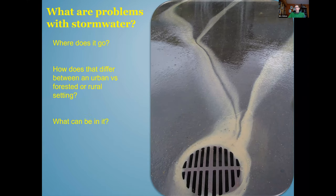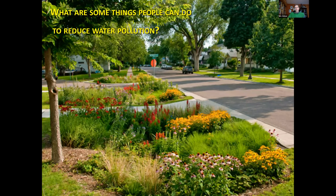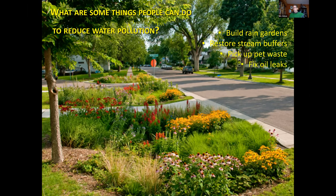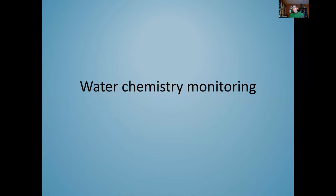Stormwater can contain a variety of toxic compounds, including chemicals from tire rubber that are implicated in urban stream mortality syndrome. There are different things people can do to reduce water pollution: build rain gardens, restore stream buffers, pick up pet waste, fix leaking vehicles, avoid fertilizers and chemicals in the yard, and take steps to limit runoff from their property.